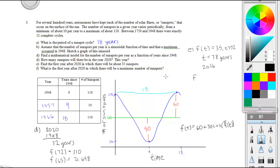Part F asks what is the first year after 2020 in which there'll be a maximum number of sunspots. You don't even really need the calculator because there was a maximum in 2020 at 110, and 18 years after that there will be another maximum. I know that one cycle is 18 years, so it's going to happen in year 2038.